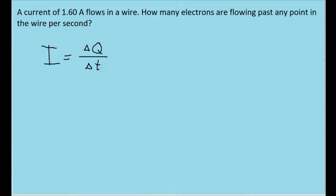Charge is in coulombs and time is in seconds. So if we're given a current of 1.60 amperes, then that's the same thing as saying that we have 1.6 coulombs passing through a point in the wire every second.